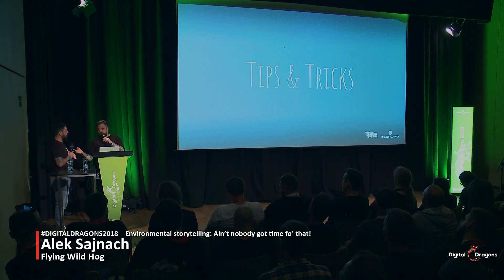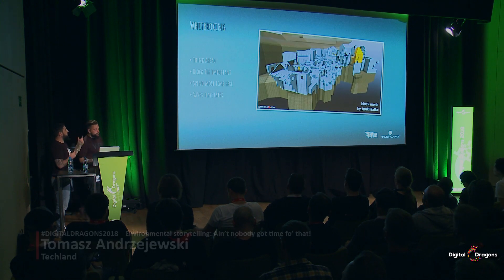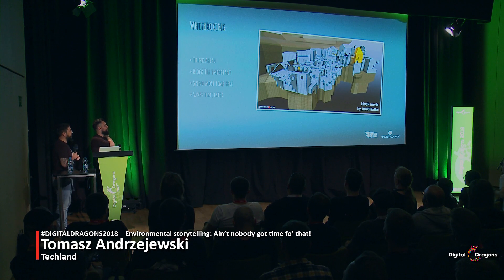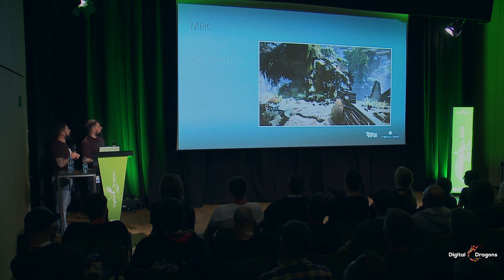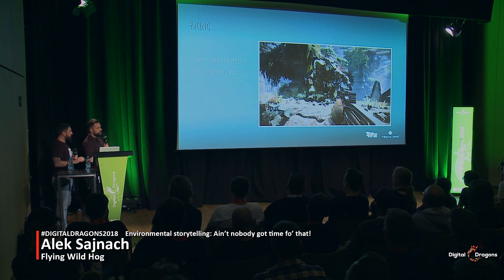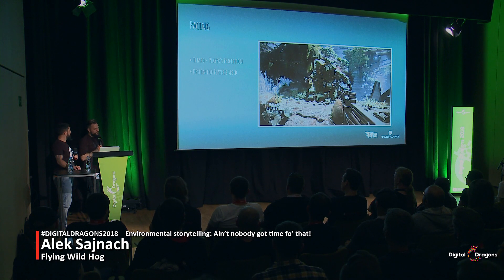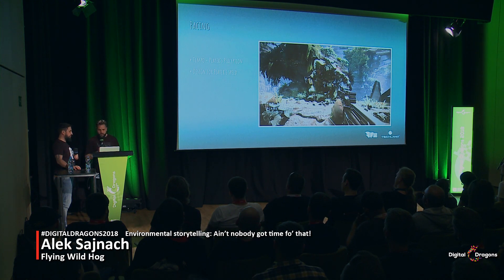We're going to finish with quick tips and tricks. White boxing — really spend most of your time here because it will save money and time later on. Then there is pacing, which is really important because it tells you what kind of tempo, what the player's perception is. If you've ever played Shadow Warrior 2, it's a hell of a speedy game — you're just running around jumping, and there's no place for micro storytelling when the player is just running all the time. So you have to design all of your environmental storytelling for the player's speed. A couple of games slow players down in the hubs so it's easier for them to look around.